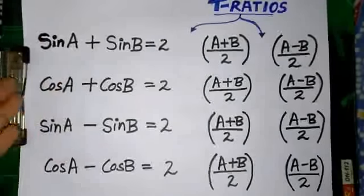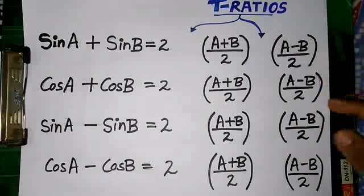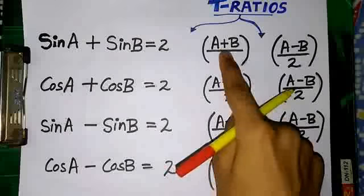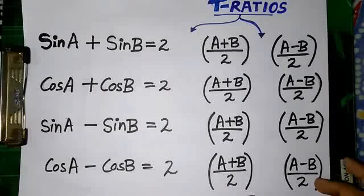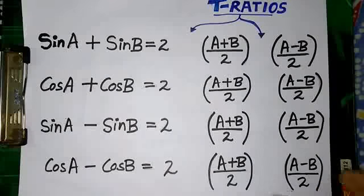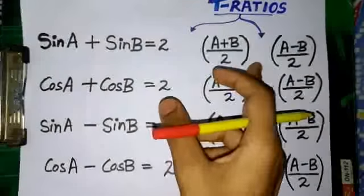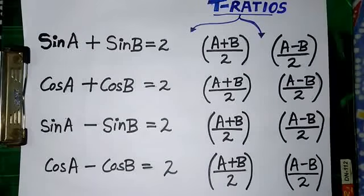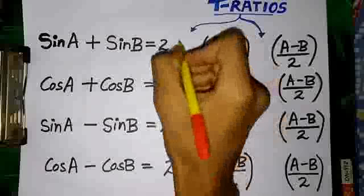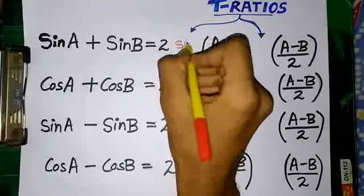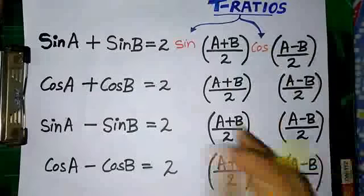Now we have the formulas of the type sin(A+B) ± cos(A+B) and so on. In these formulas there's a common thing — the 2, and (A+B)/2 and (A-B)/2 appear in all the formulas, and that part is not a big deal to learn. The problem is with the trigonometric ratios: what ratio goes in the first place and what goes in the second. For the formula of sinA + sinB, we know sine is good, it maintains equality, so it'll take the first part — because it's the formula of sine — and give the second part to cos.